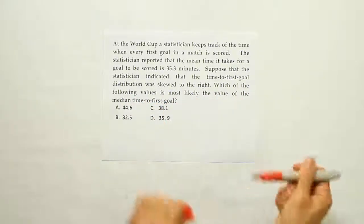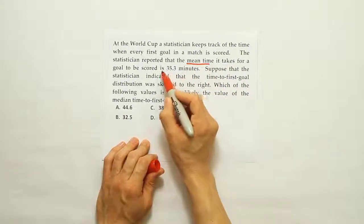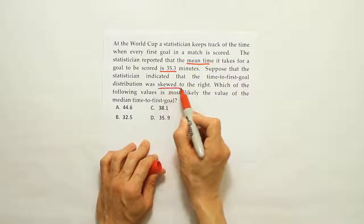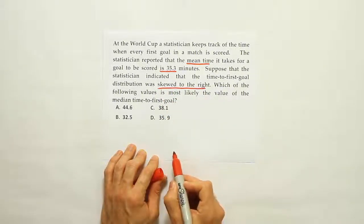Let's underline some things in this problem here. They say the mean time is 35.3. They also tell us that the distribution was skewed to the right. Let's try to put that information to use.